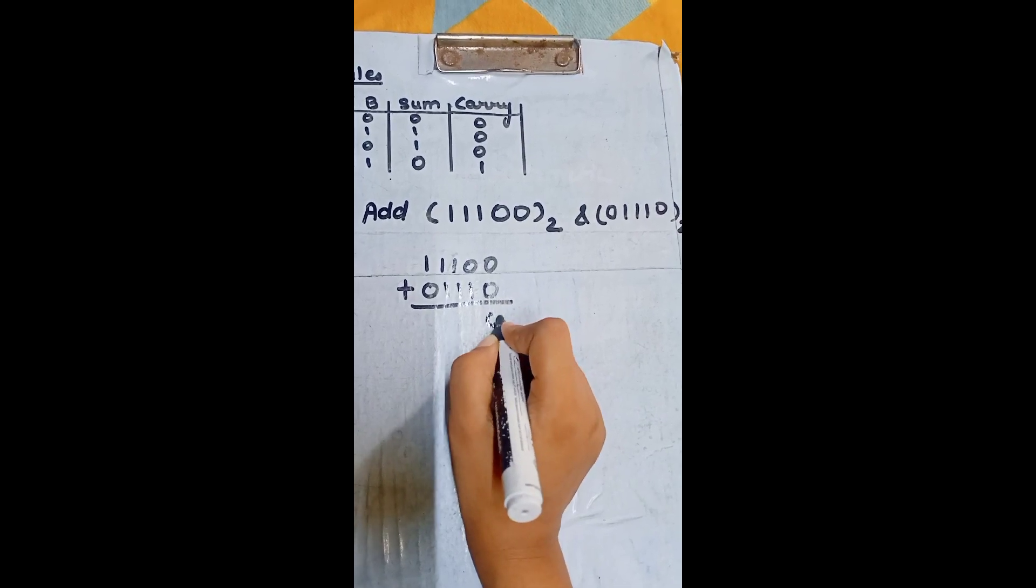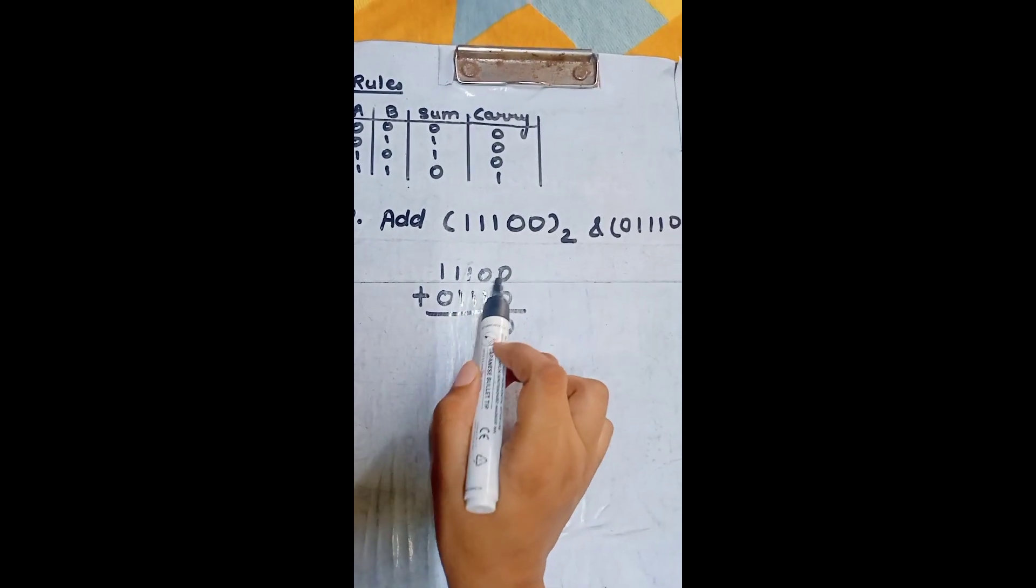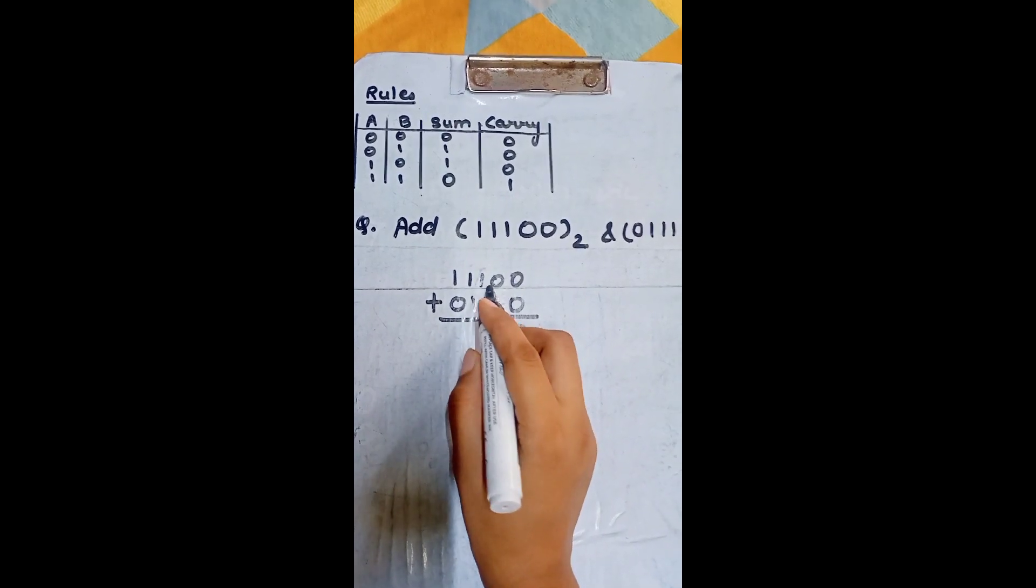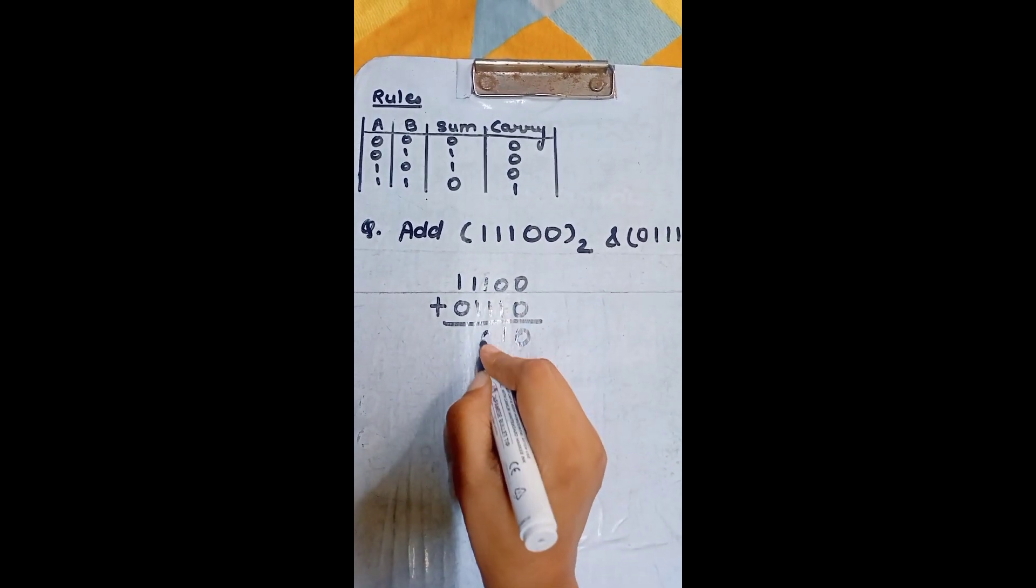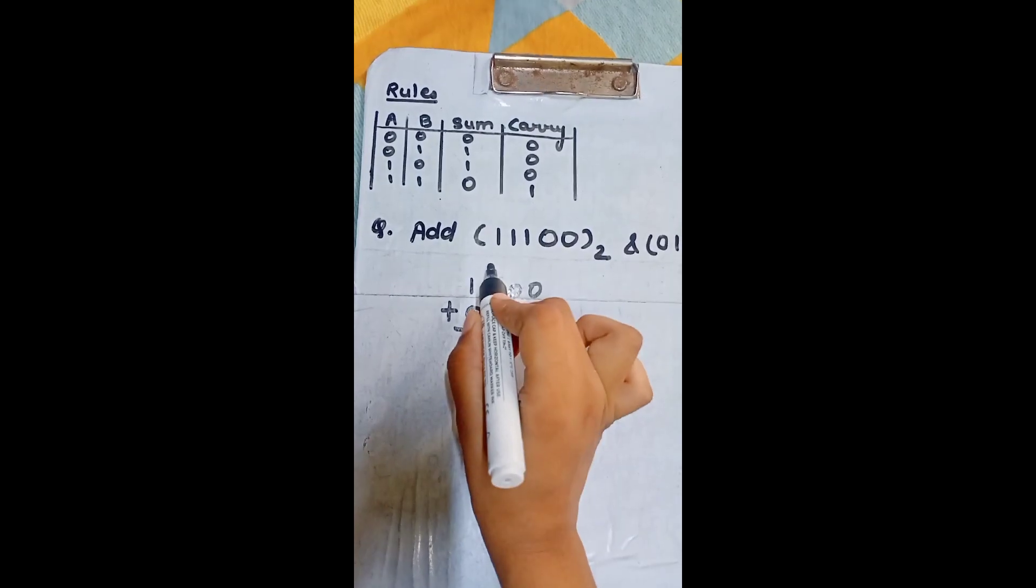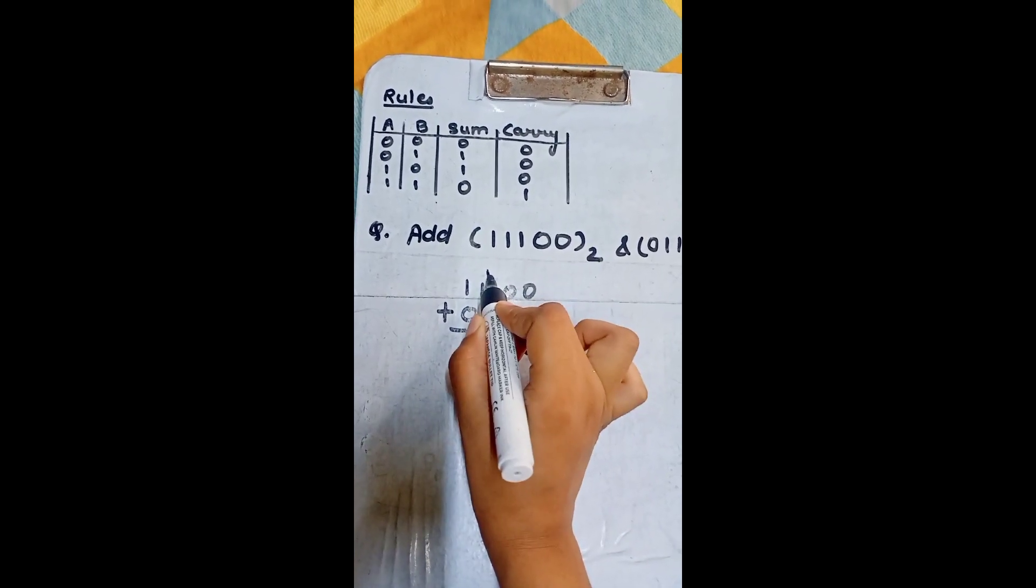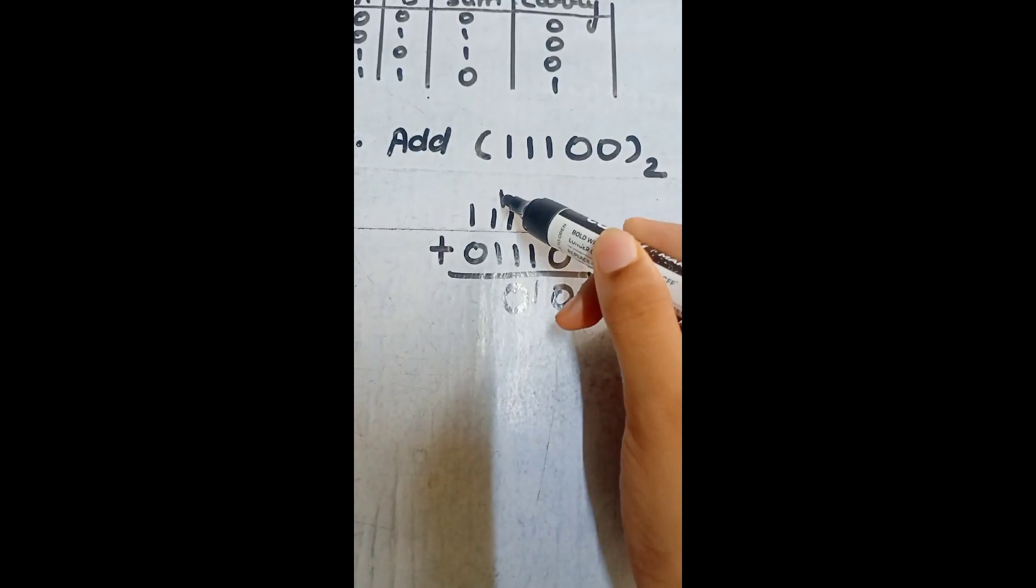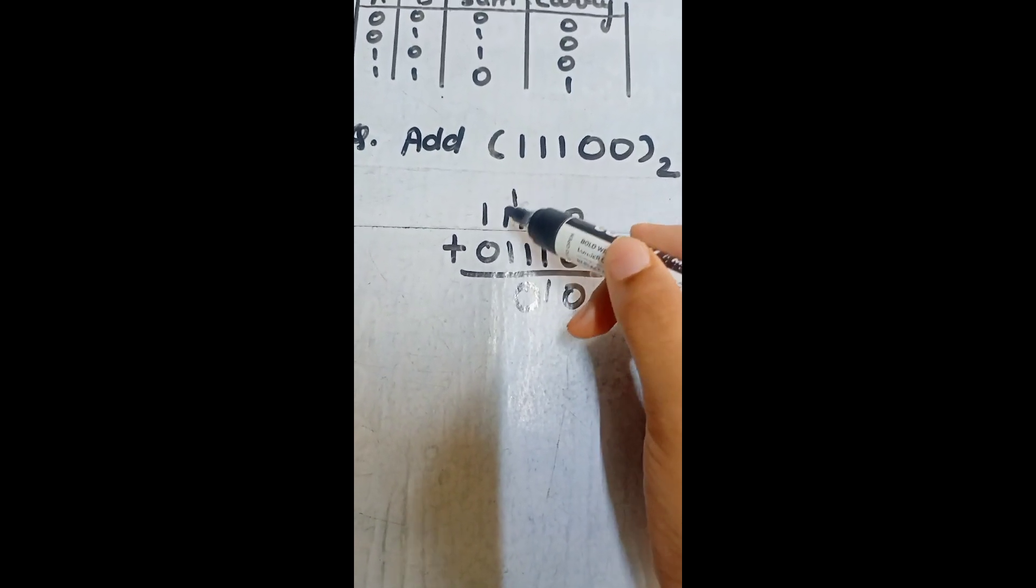0 plus 0, sum is 0, carry is also 0. 0 plus 1, sum is 1, carry is 0. 1 plus 1, sum is 0, carry is 1. So, now, take this carry and add this both carry and this 1.